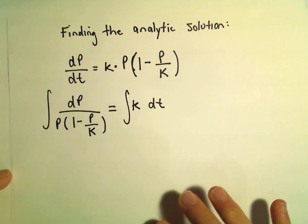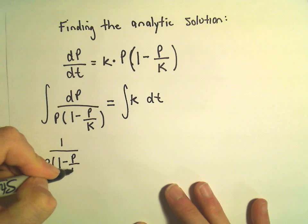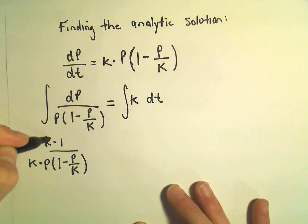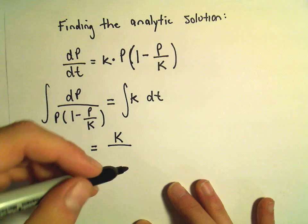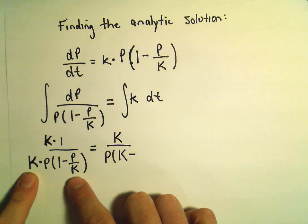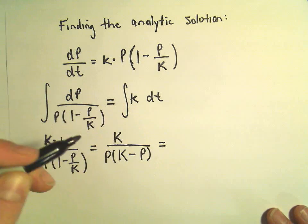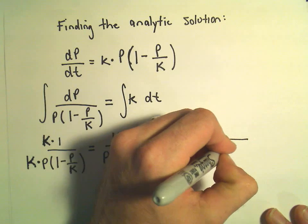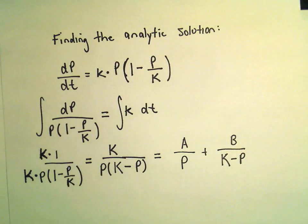The right side is no problem. The left side is a little worse — we're going to have to do partial fractions on this one. So we have 1 over p times 1 minus p over K. To get rid of the fractions, I'm going to multiply the numerator and denominator by capital K. Distributing the K inside the parentheses gives us K in the first term, and the K's cancel in the second term, leaving p. So now we've got a rational function. I'm going to give each factor its own fraction: a denominator of p and a denominator of K minus p, with constants a and b on top.